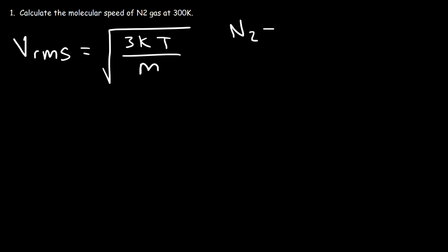Now using the periodic table, the atomic mass of nitrogen is 14.01, but in this problem we have two of them. So it's 28.02 atomic mass units.